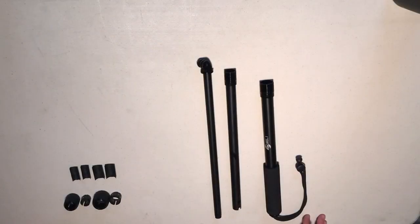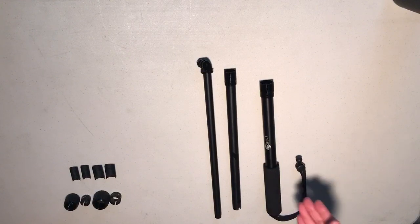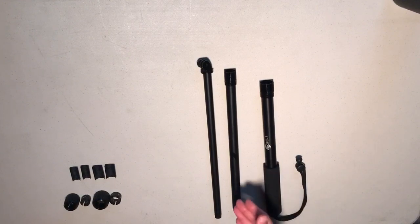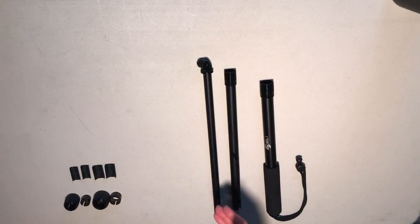First, I'll go over the pieces in the assembly. Here, we have the three sections of the pole. The largest with the handle is the base. The second largest is the middle. The smallest with the mount is the top section.